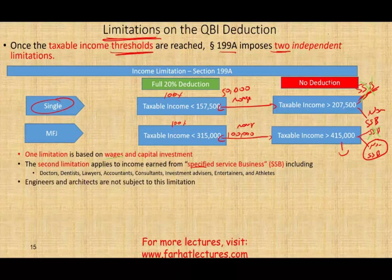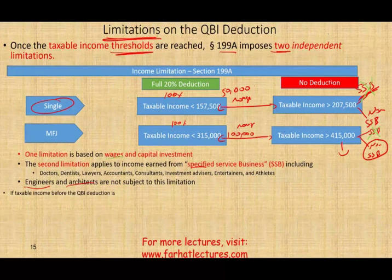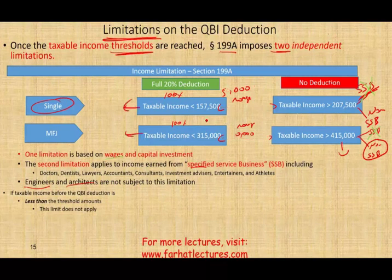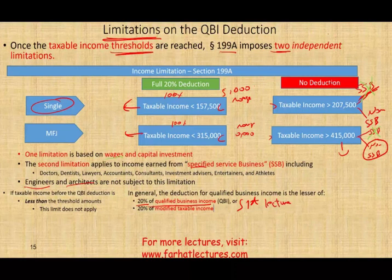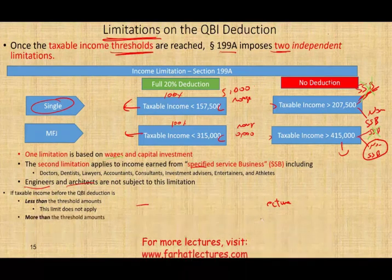Engineers and architects are not subject to this limitation — they are not considered an SSB. Simply put, if your taxable income before the QBI deduction is less than the threshold, the limit does not apply. As long as your income is below $157,500 or $315,000, whether your business is an SSB or a non-SSB, you'll get the 20% deduction. The deduction is 20% of qualified business income or 20% of modified taxable income — the lower of these two.